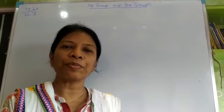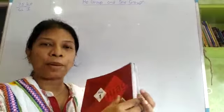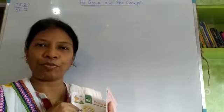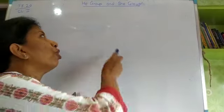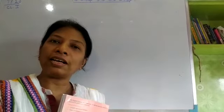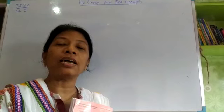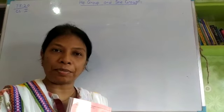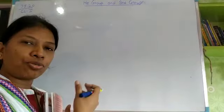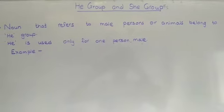Hello class 1 children. Today we will do English grammar chapter 5: he group and she group. So what is he group and she group? We have already done our chapter on noun. So what is a noun? Noun is a name of a person, place, things, or animal. So here, related to that, what do you mean by he group or she group?